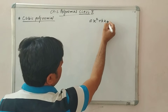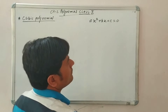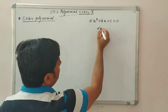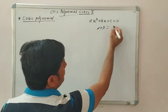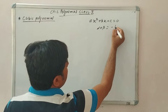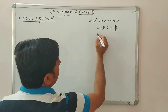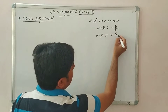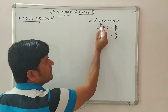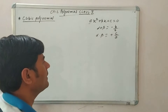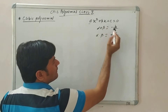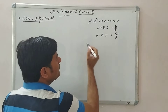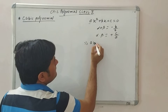For a quadratic polynomial ax² + bx + c = 0, the relation of roots is: alpha plus beta, that is the sum of roots, equals minus b upon a. And alpha into beta equals c upon a — that is the constant upon coefficient of x square.